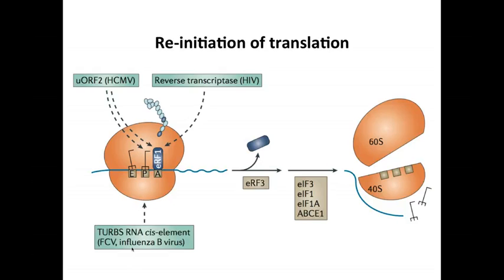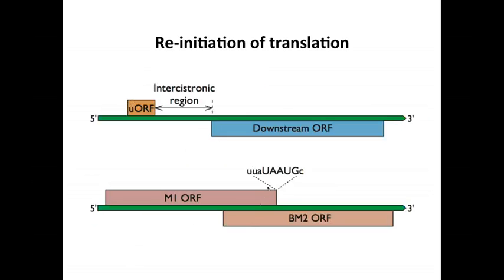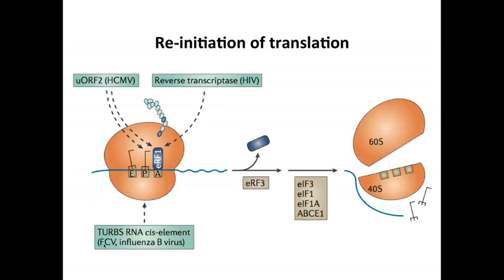In influenza virus, a specific sequence element promotes reinitiation so that ribosomes don't dissociate. There is also an RNA cis-element in the feline calicivirus genome that does the same. So reinitiation of translation doesn't occur randomly — it is stimulated by viral proteins or viral sequences.